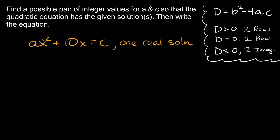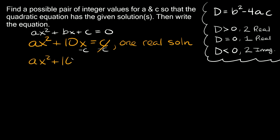Here's the next one: ax squared plus 10x is equal to c, and we're told it has one real solution. The first thing you want to do is make sure your equation is in standard form — ax squared plus bx plus c equals zero, with all terms on one side. So let's subtract c from both sides, giving us ax squared plus 10x minus c is equal to zero.